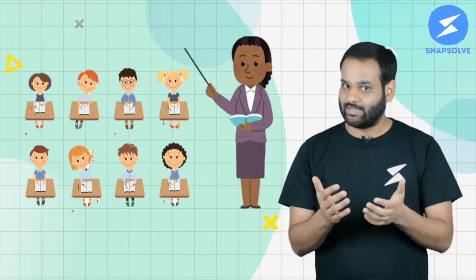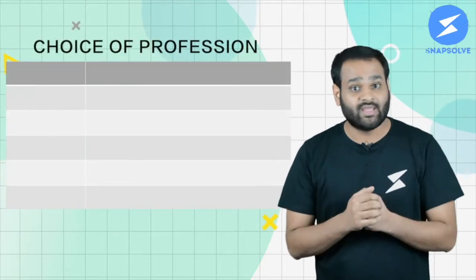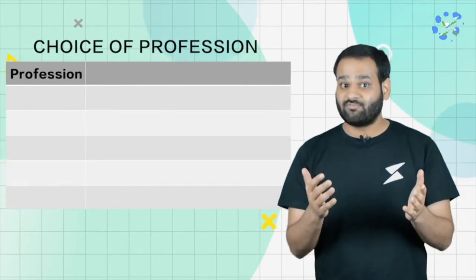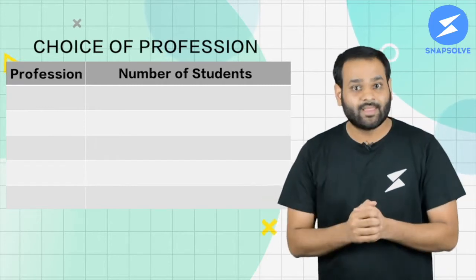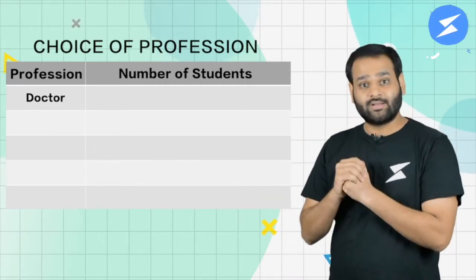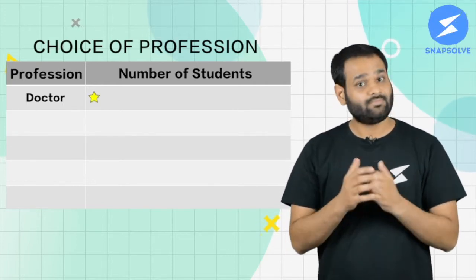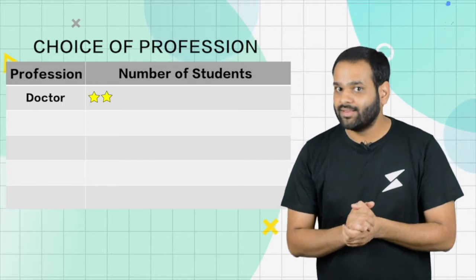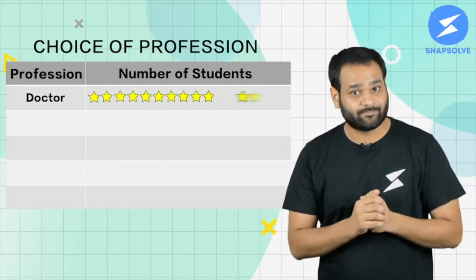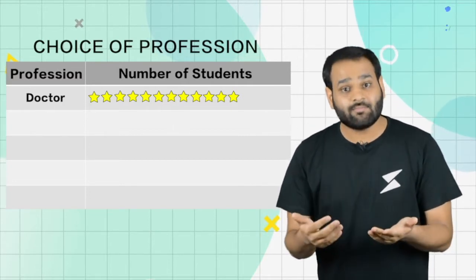Mrs. Matthew took the help of a student named Reema. She asked her to make a table with two columns — in one column to mention the types of profession, and in the next column to mention the number of students. Reema pasted one picture to show that a student wants to be a doctor, then a second picture for the second student, and likewise pasted 12 pictures showing that 12 students want to be a doctor.